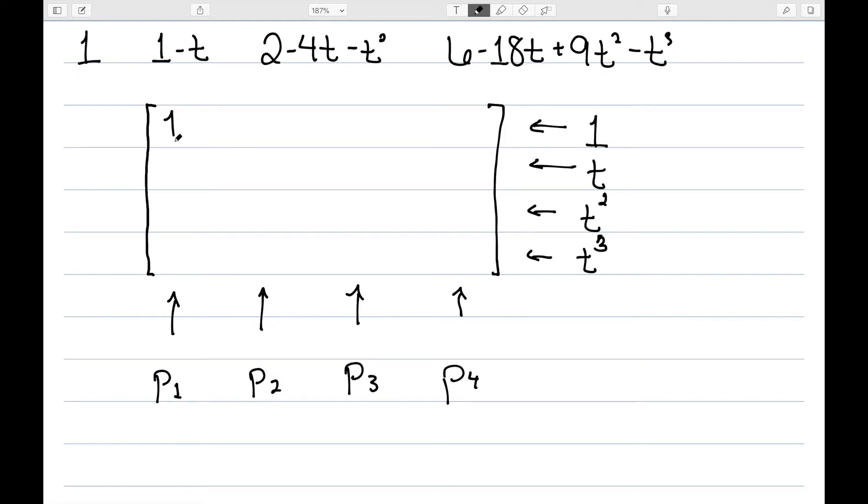My first polynomial is a 1, 0 t, 0 t squared, 0 t cubed. My next one is a 1, minus 1 t, 0 t squared, 0 t cubed.